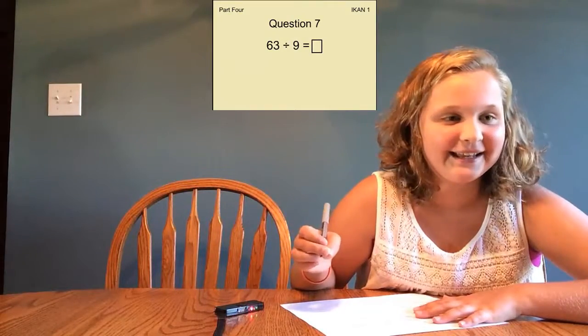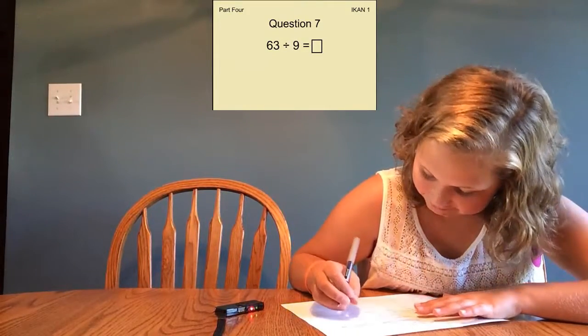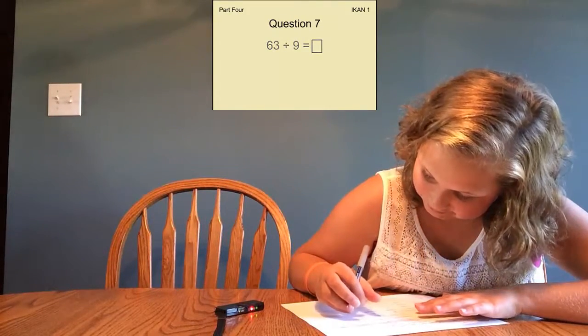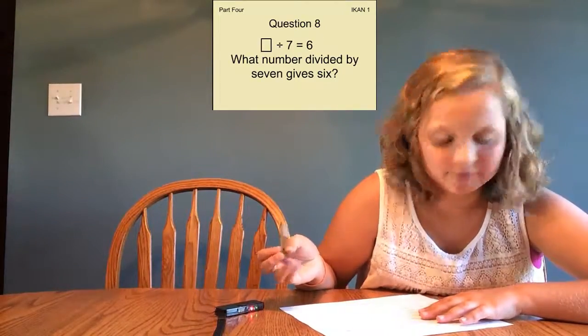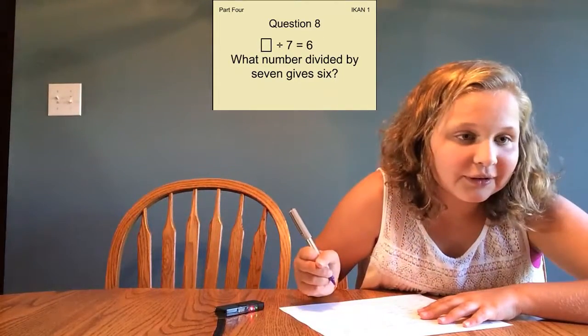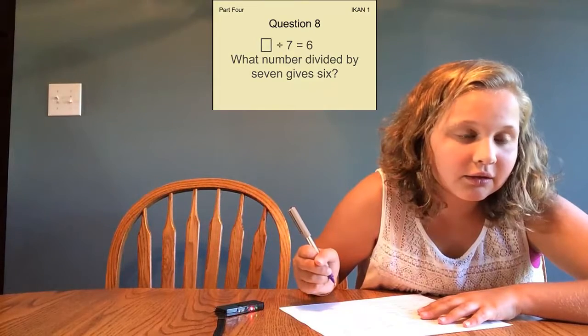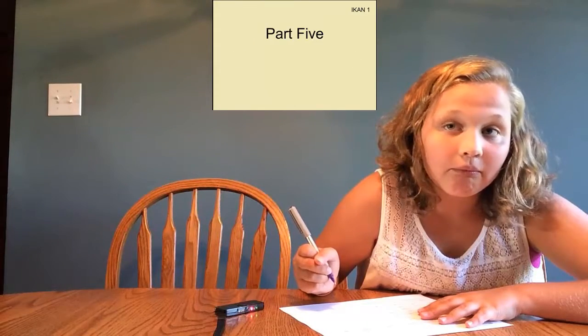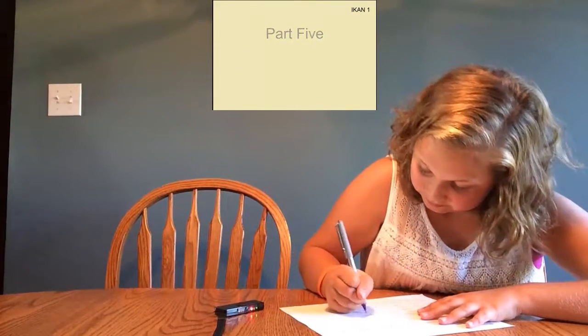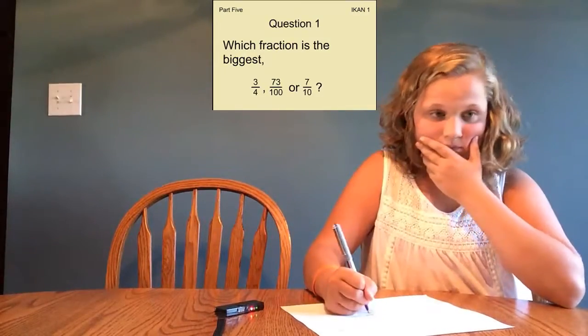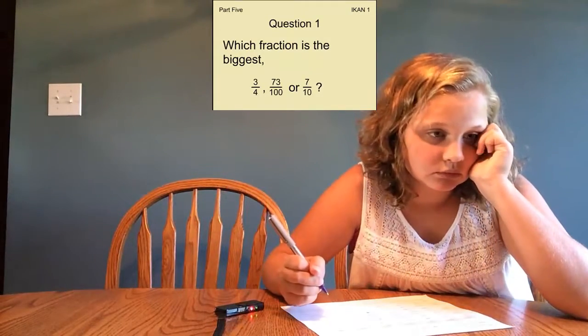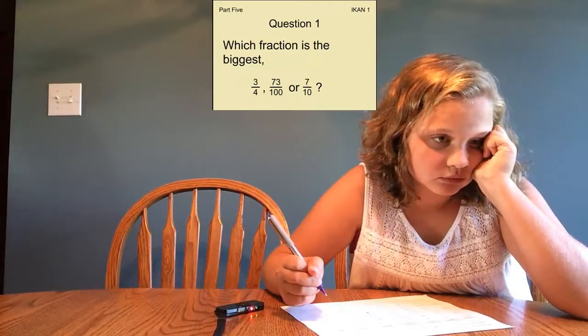63 divided by 9. What number divided by 7 gives 6? Which fraction is the biggest? 3 3 quarters, 73 hundredths, or 7 tenths.